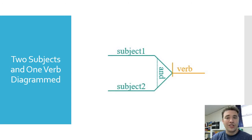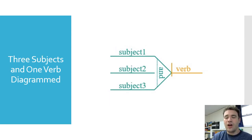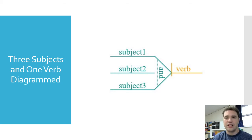Then we talked about diagramming a compound subject. If you have two subjects, there's that rocket ship shaped structure where you put the two subjects joined by the conjunction — usually 'and' but not always — in front of the vertical line, with the verb on the horizontal line afterward. And for three subjects, same rocket ship shape, you just add another line, so you've got subject and subject and subject, then the vertical line and the verb.